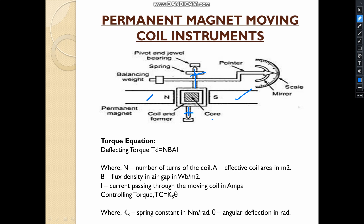Electromagnetic damping occurs due to the change in the direction of induced current in the core. The total potential energy of the system is liberated as heat due to eddy currents in the core. The damping torque is produced by the eddy current in the aluminum former, which is highly sufficient for measurement. PMMC can be widely used for voltage measurement.